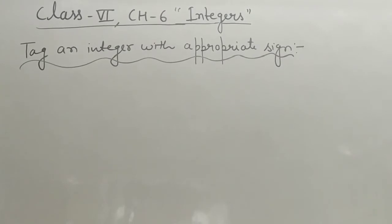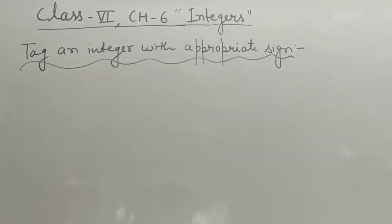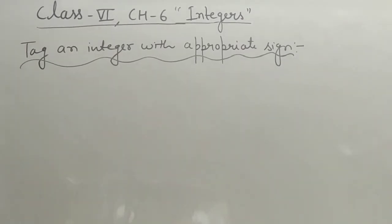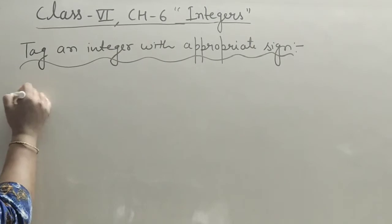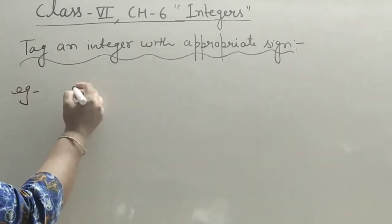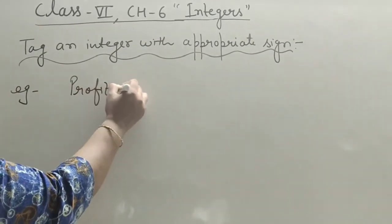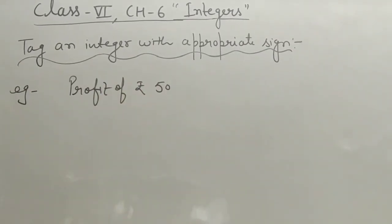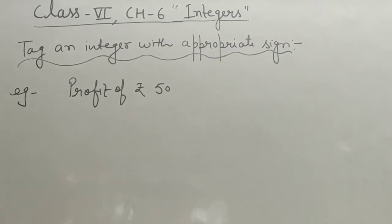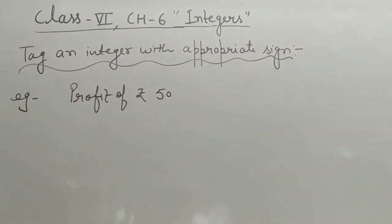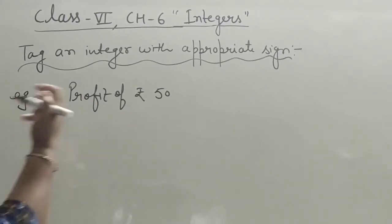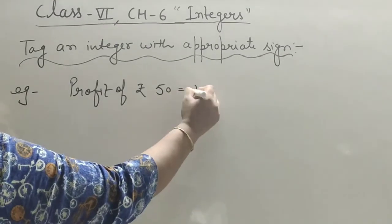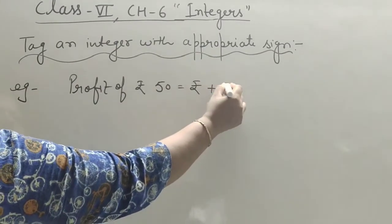Now come to the next topic: tagging an integer with an appropriate sign. For example, 'profit of rupees fifty' — profit means gain, so we write plus fifty, or plus rupees fifty. If the word is 'loss of rupees fifty,' we write minus rupees fifty. We have to write the sign first.